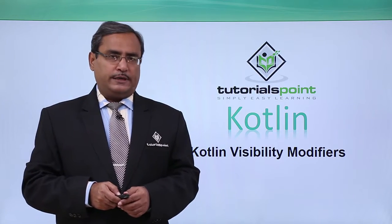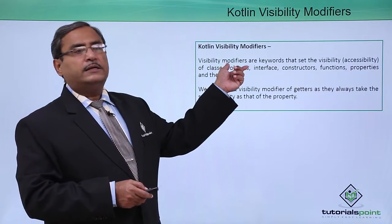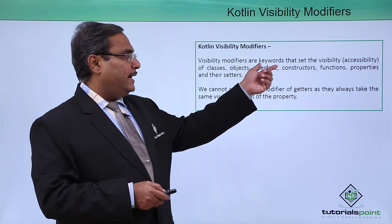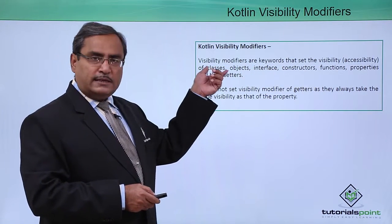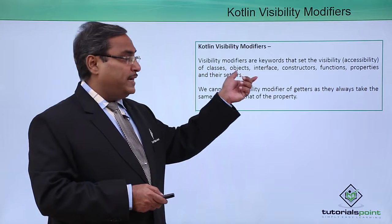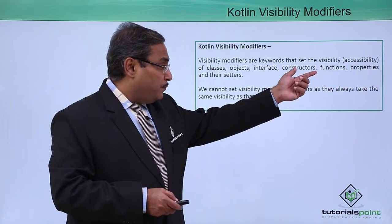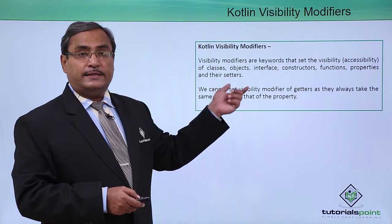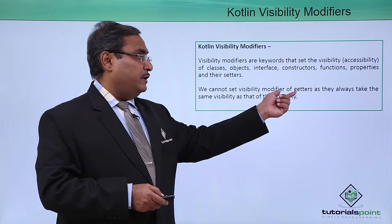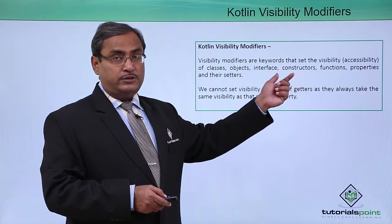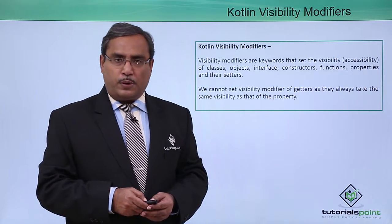Kotlin visibility modifiers. Visibility modifiers are keywords that set the visibility, also called accessibility, of classes, objects, interfaces, constructors, functions, properties and their setters. We cannot set a visibility modifier for getter functions because they will take the same visibility as that of the property.